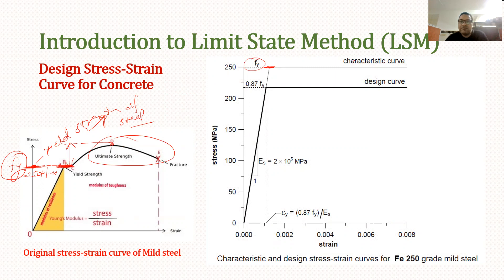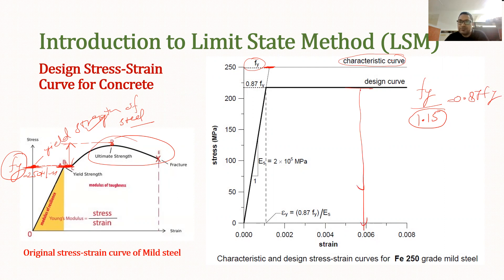The curve corresponding to Fy is considered as the characteristic curve. Similarly, to find out the design strength we divide Fy by 1.15 — this 1.15 is the safety factor for steel, as shown in the previous slide. Dividing this we get 0.87 Fy. We will use the strength of steel up to this point, and the remaining is the reserve strength. In our design we will be considering 0.87 Fy as our maximum strength and designing all elements based on this strength. Similarly for concrete, the maximum strength is taken as 0.447 fck.